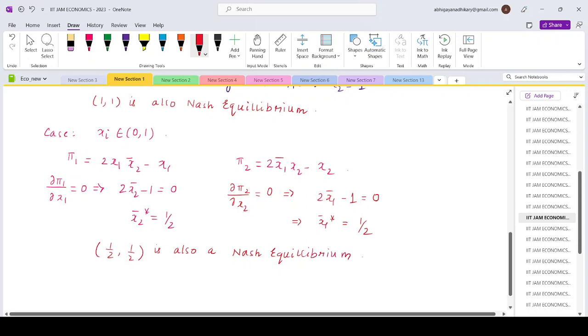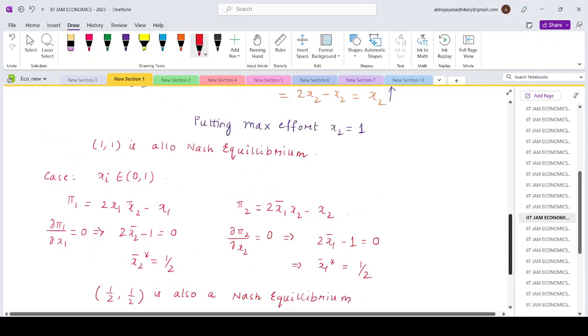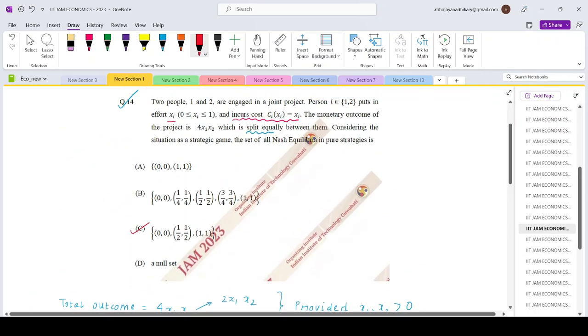Therefore, the three candidates of Nash equilibrium are (0,0), (1/2, 1/2), and (1,1). So that basically gives us option C. Thank you.